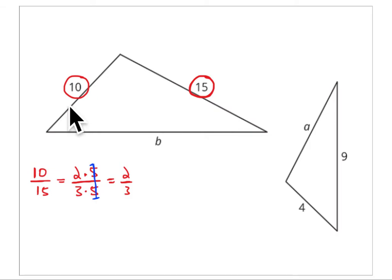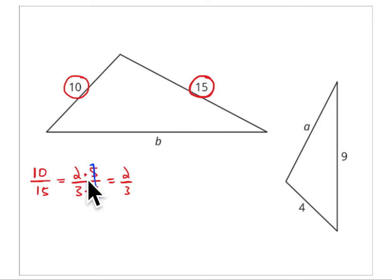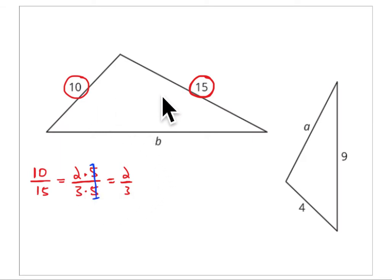The ratio of 10 to 15 — this side compared to this side — is 10 to 15 units. That simplifies to 2 to 3. You can see that it's two groups of 5 and three groups of 5. You can divide 10 by 5 to get 2, and divide 15 by 5 to get 3. This relationship is 2 to 3.